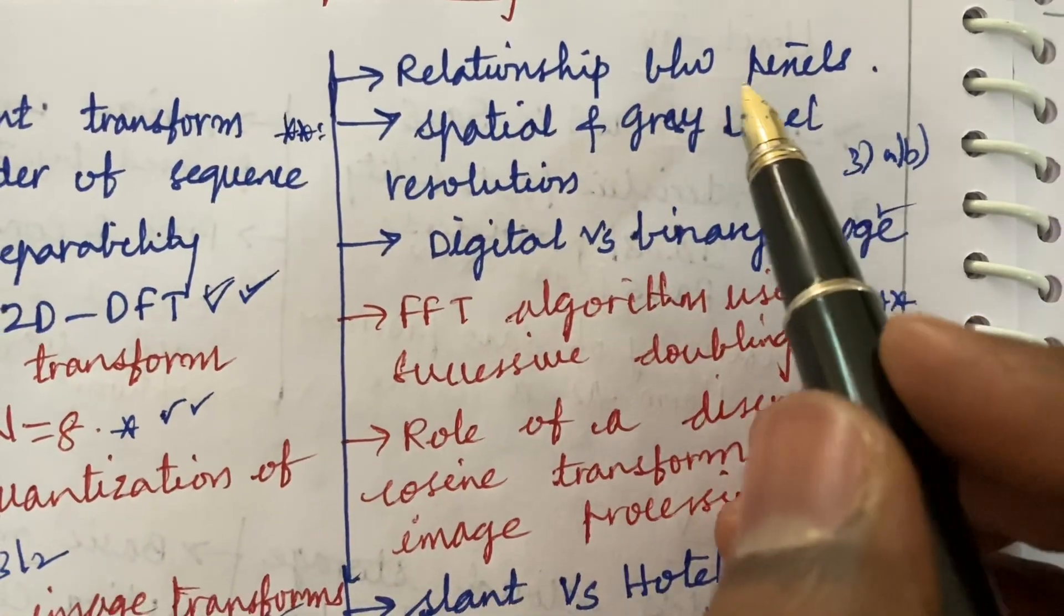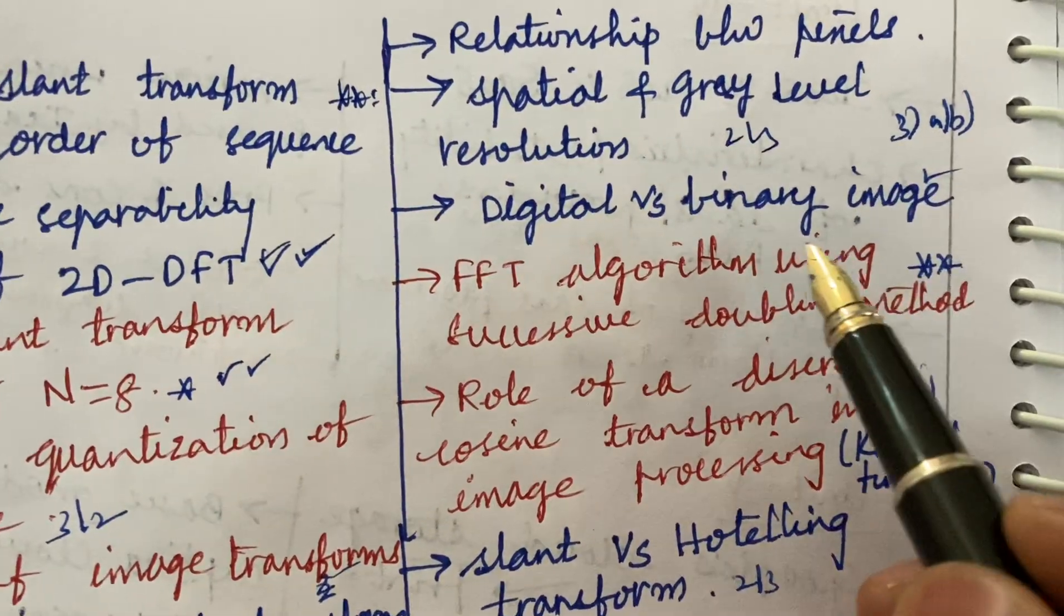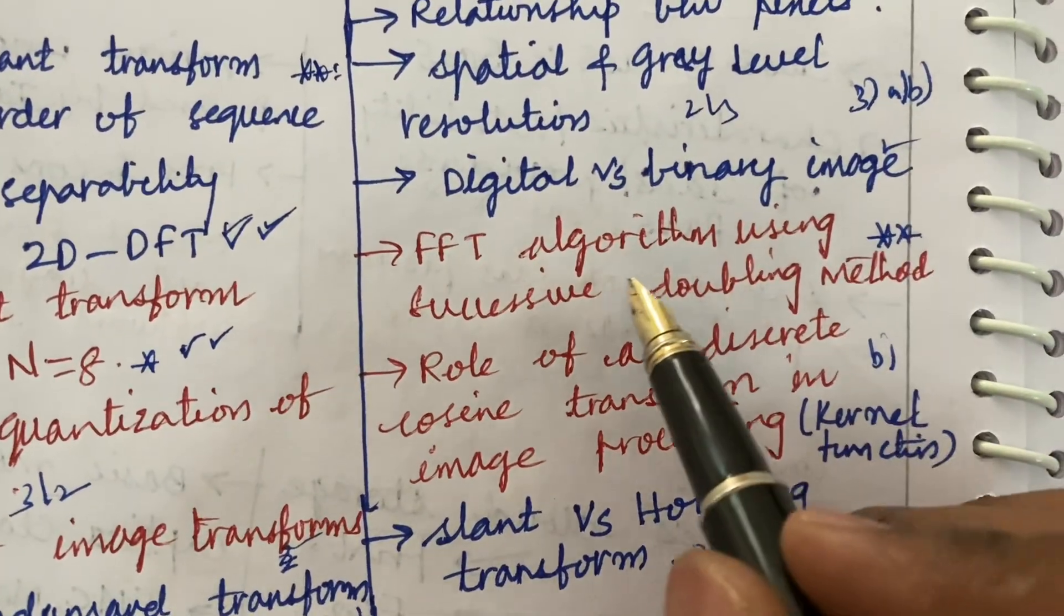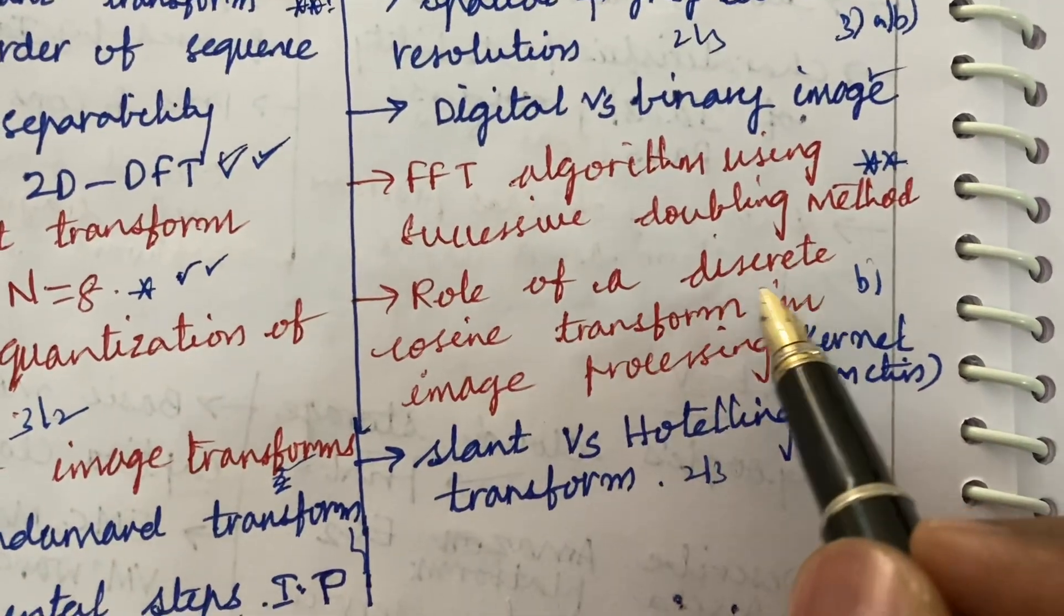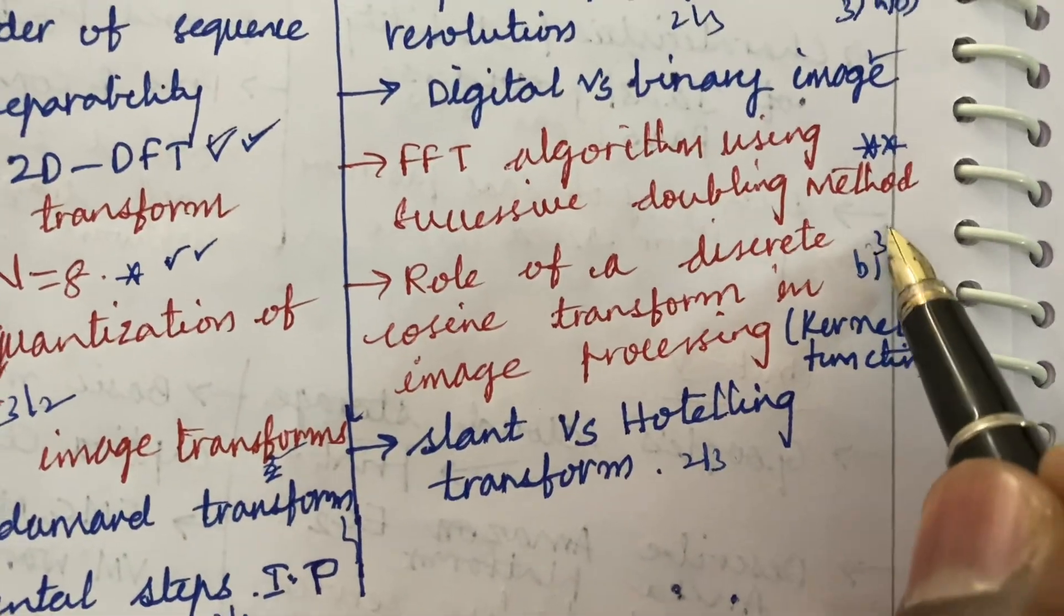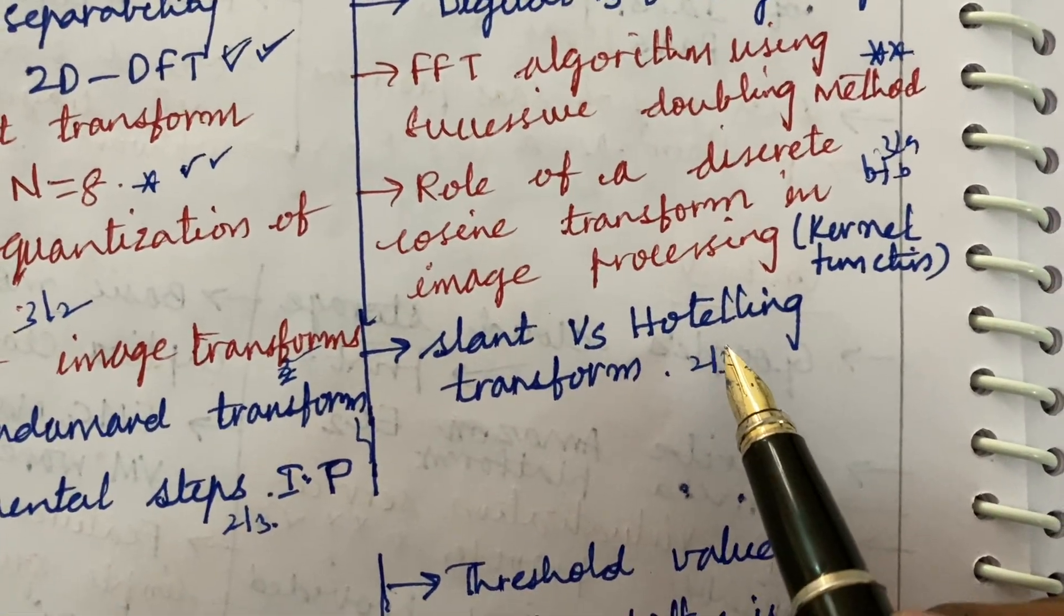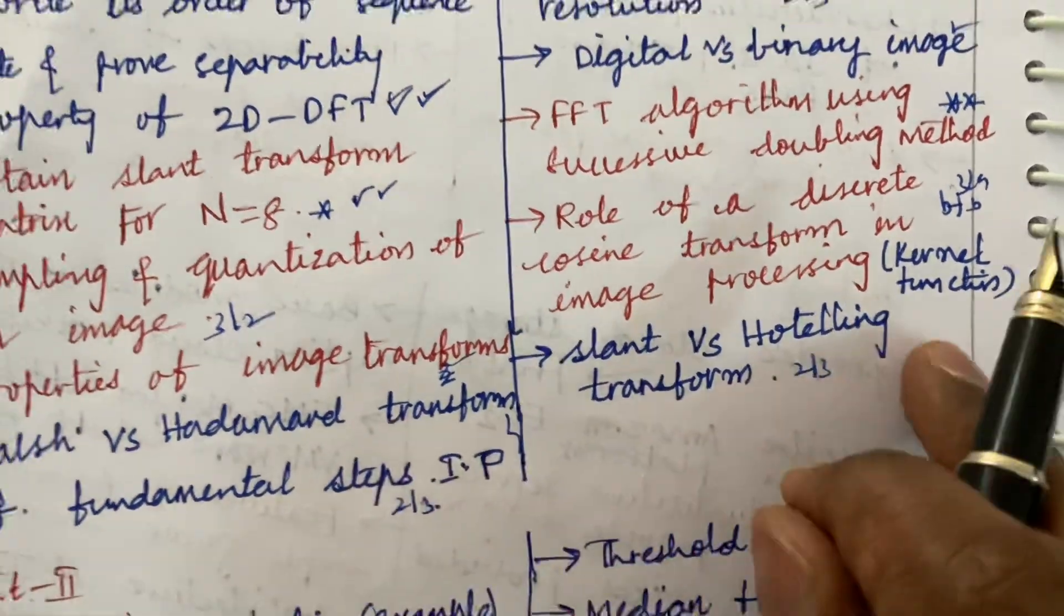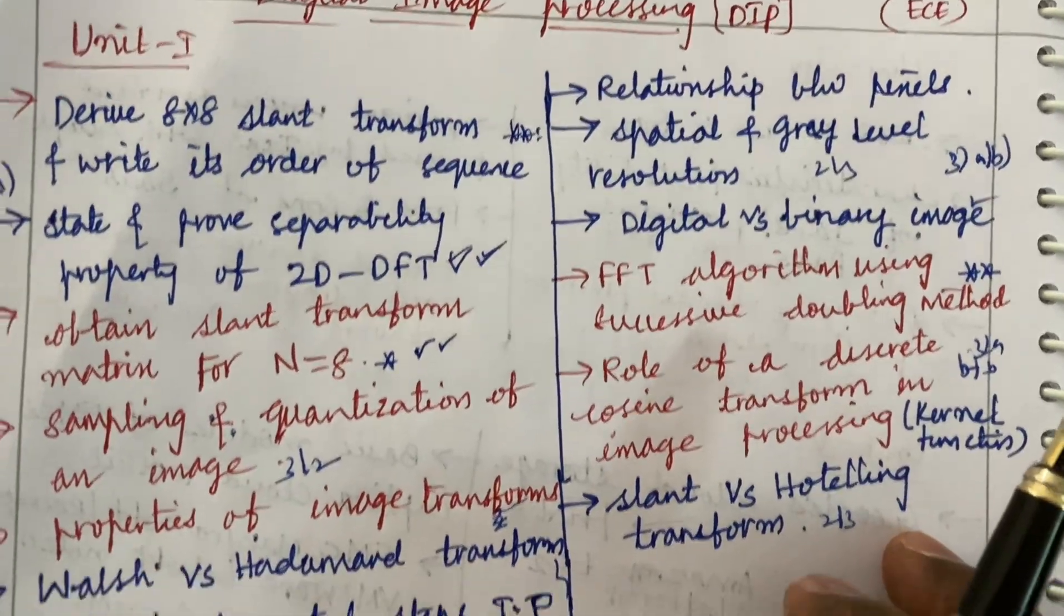Now let's look into 3AB. The relation between the pixels and the spatial and gray level resolution is said to be a 2 mark and 3 mark question. Digital versus binary image, FFT algorithm using successive doubling method, and the role of a discrete cosine transform in image processing using kernel function is said to be 3A and 3B combination. Slant versus Hotelling transform. These are said to be the 15 mark questions related to unit one of digital image processing.